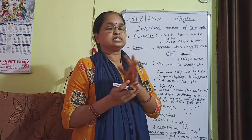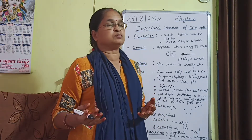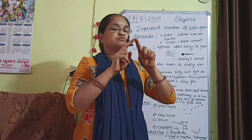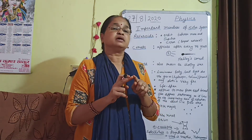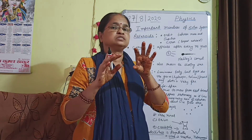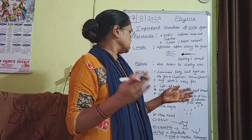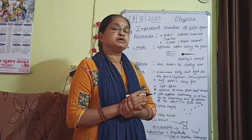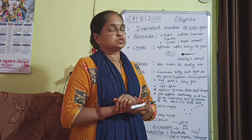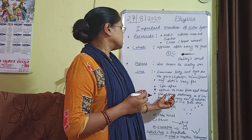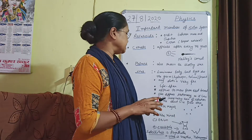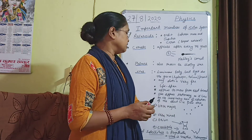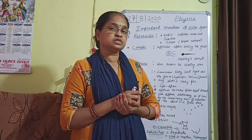When a star dies, it does so either in the form of a dwarf star or a neutron star. This happens because all the hydrogen atoms present inside it eventually burn off completely. Stars appear to move from east to west because the Earth is moving from west to east.